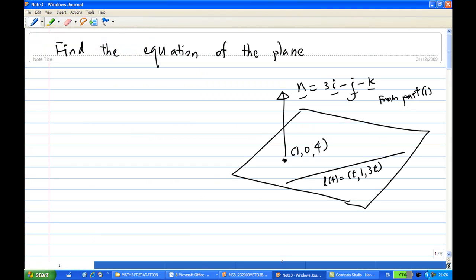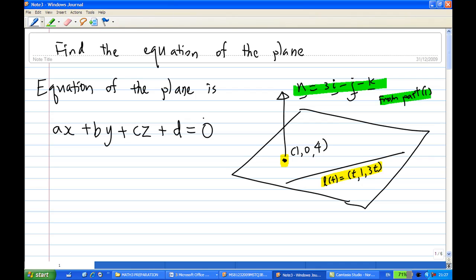So let's look at the answer for this part now. So I have a plane. The plane passed through the point (1,0,4) and it contains the line t, 1, 3t. Now earlier we have found out that by putting up some point, we find that the normal to the plane in this case is 3i - j - k from part one. So based on that, we know equation of the plane is ax + by + cz + d = 0.